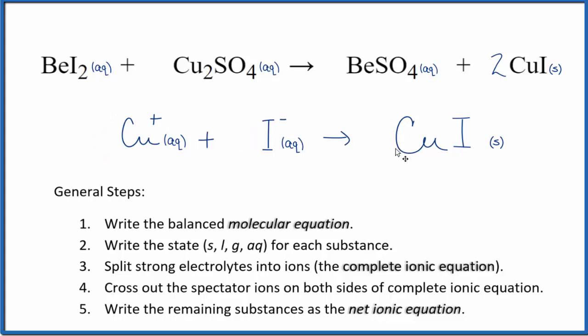The atoms are balanced, and if you look at the charge, we have a positive and a negative. That balances out. That's a net charge of 0. Over here, net charge of 0. This is Dr. B with the balanced net ionic equation for BeI2 plus Cu2SO4, beryllium iodide plus copper 1 sulfate. Thanks for watching.